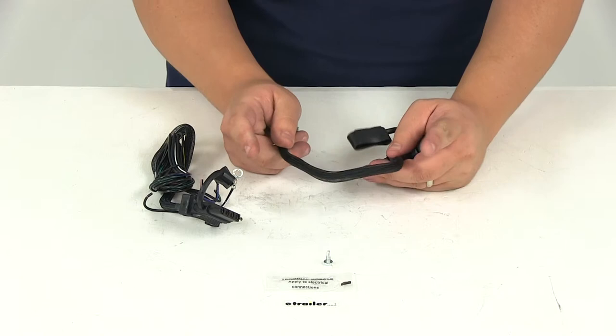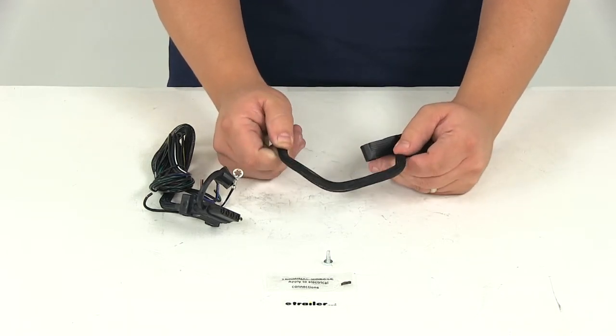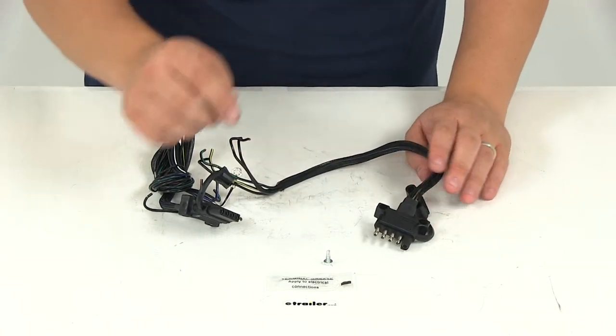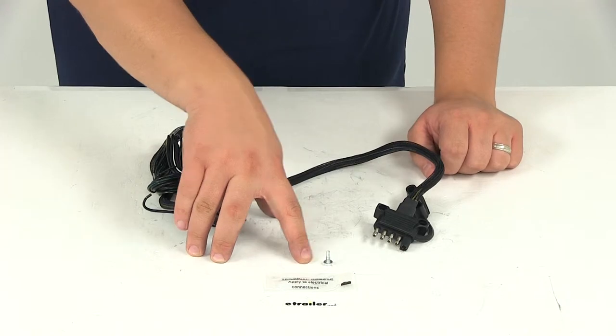It also features nylon sleeves and heat shrink tubing designed to protect the wires. You're also going to get the terminal grease packet and the ground screws. Both of those are included.